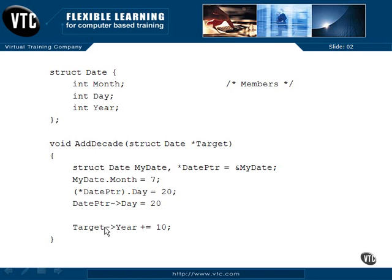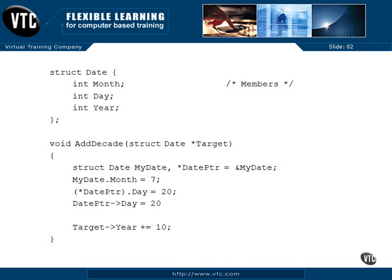Now down here we finish addDecade: 'target->year += 10' adds our decade to target, and it's already taken effect. We don't have to return anything — the 10 years has been added to the original. Since this is void, we won't get errors carrying information back because we changed the original. We passed this by reference using a pointer to a structure. Pointers to structures are manipulated just like any other pointer — we can add or subtract integers to move date pointers throughout memory across an array.